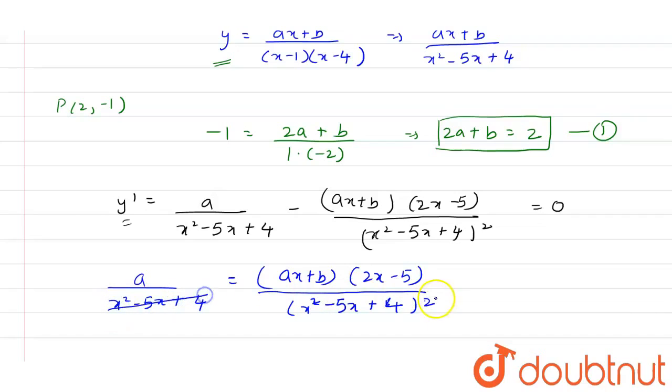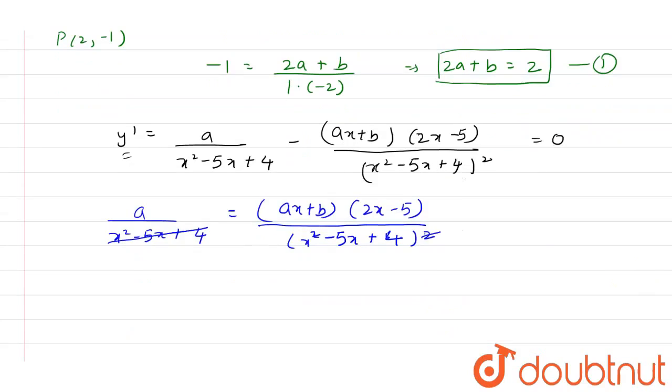Now this (X² - 5X + 4) cancels out, so A equals (AX + B)(2X - 5) / (X² - 5X + 4).